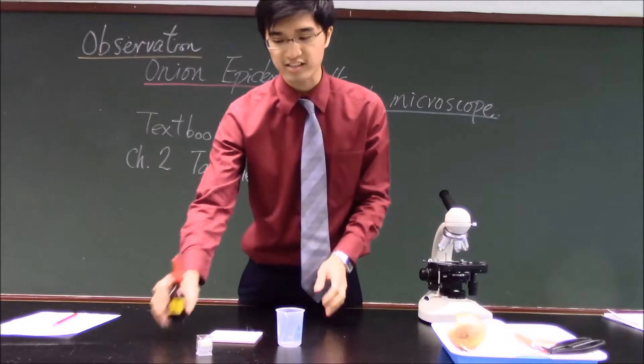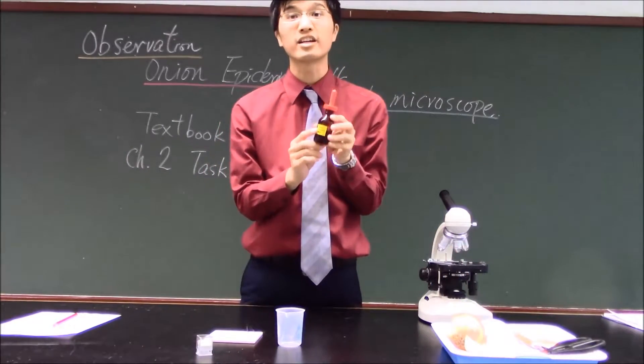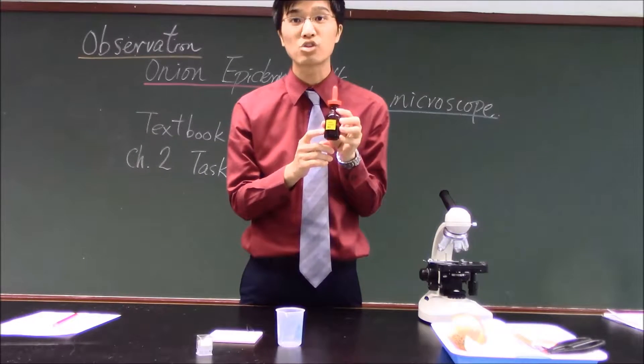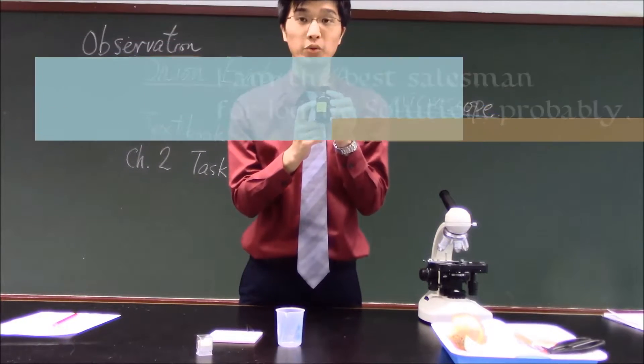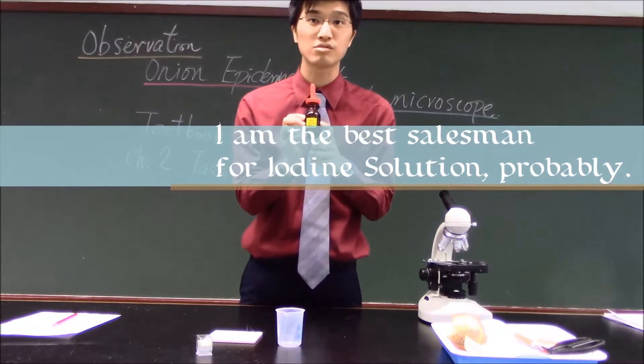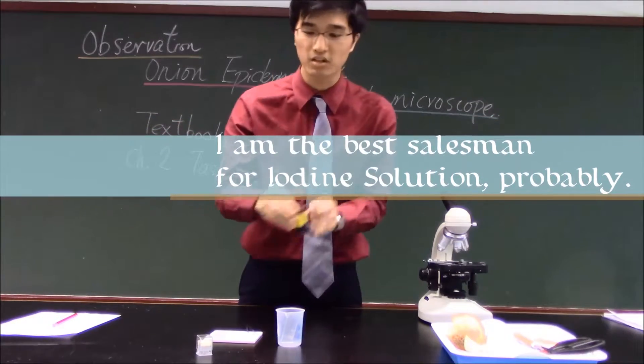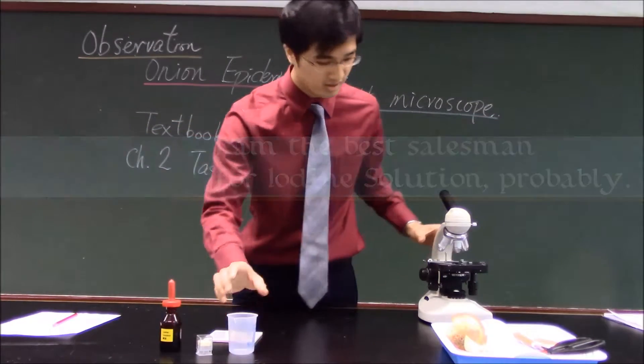And the other thing is that, you know, the onion, the color is quite pale, so you need to add some color to make it visible. So we have the iodine solution. We have to add some on the onion cells.